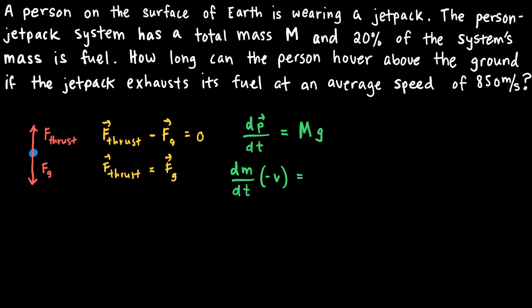The right-hand side of the equation remains as mg. The goal is to solve for the amount of time t that the person-jetpack system can hover. I'll solve for t using separation of variables and integrating both sides. I need to arrange the equation properly — moving m to the left-hand side and everything else to the right. Performing those operations, I'm left with minus 1 over m dm equals g over v dt. So I've divided both sides by m, multiplied both sides by dt, and divided both sides by v.